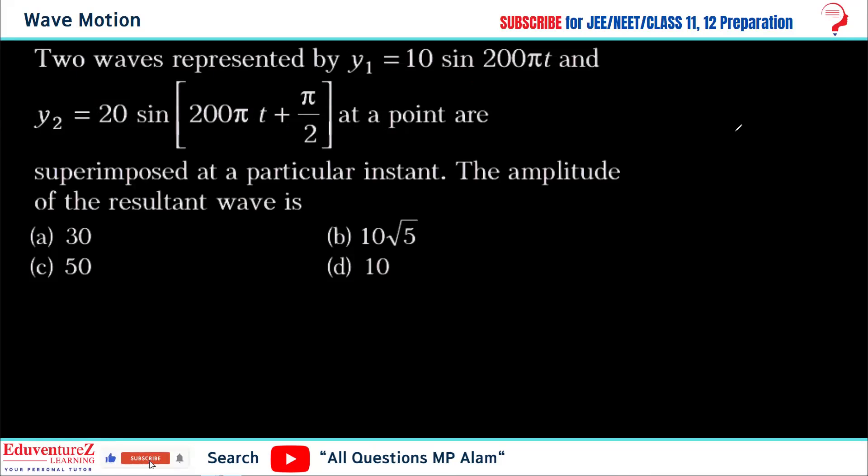If superimposition is happening, it means that two vectors have to be added. That means y equals y1 plus y2. So this is a superposition of waves.